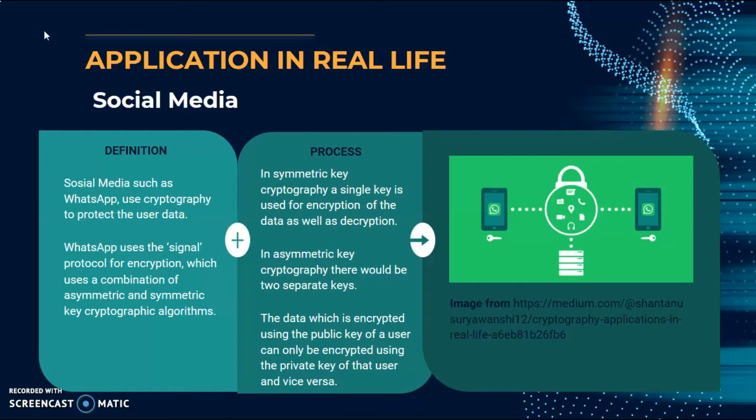For the second application is social media. Social media such as WhatsApp use cryptography to protect user data. WhatsApp uses a Signal protocol for encryption which uses a combination of asymmetric and symmetric key cryptography algorithm. In symmetric key cryptography, a single key is used for encryption of the data as well as decryption. In asymmetric key cryptography there will be two separate keys.